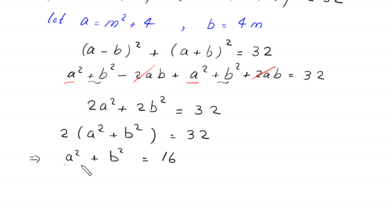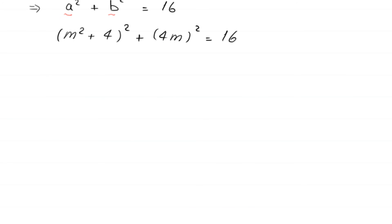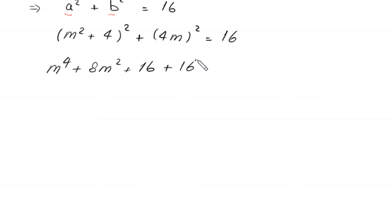Replacing a with m²+4 and b with 4m: (m²+4)² + (4m)² = 16. Expanding, (m²+4)² = m⁴+8m²+16, and (4m)² = 16m². So m⁴ + 8m² + 16 + 16m² = 16.